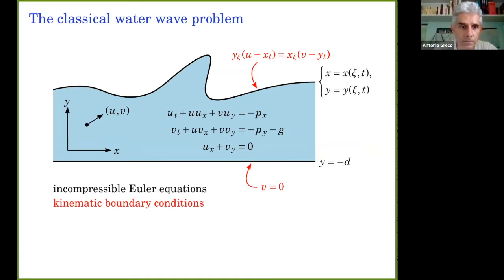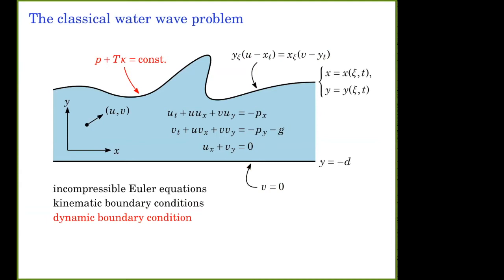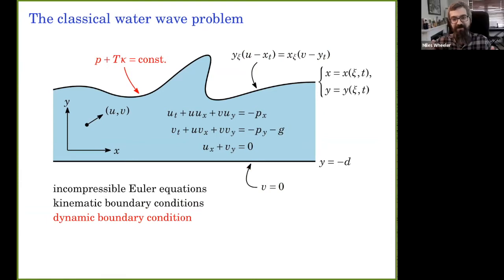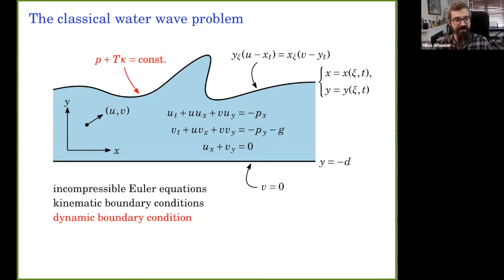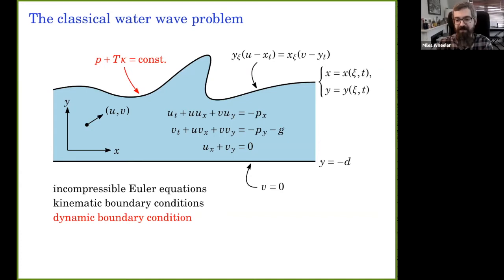The dynamic boundary condition is about the balance of forces between the fluid region we're tracking and the region above. Essentially it's a Laplace-Young law for the jump in pressure between the two fluids. Since our model for the upper fluid is just constant pressure, we get that the pressure is prescribed in terms of some Bernoulli constant plus a term involving the mean curvature κ, where T is a non-negative surface tension coefficient. For most of the talk I'll drop the surface tension term, but I need it for these first few slides.